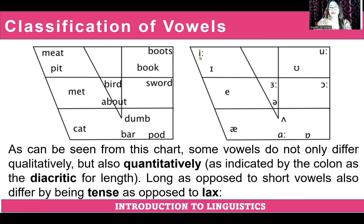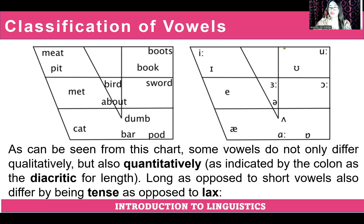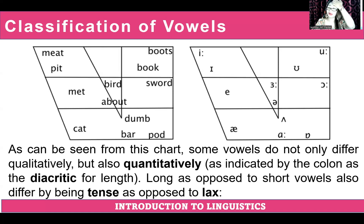For example, EE as in meet should be held longer. ER as in bird should be held longer. U as in boots is long. O as in sword is long. And A as in bar is long. So it means you have to pronounce those words longer since they carry the diacritical length mark.